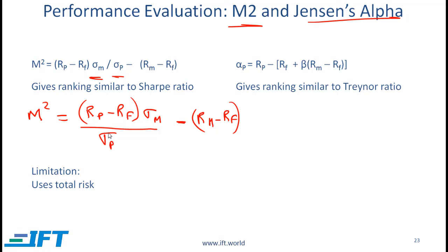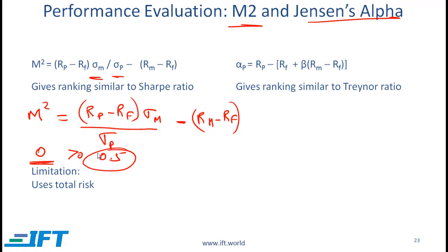The benefit of M-squared over the Sharpe ratio is that we get a number which has meaning — this is called a ratio scale. If a manager invests in a portfolio with return and risk similar to the market, the expression simplifies to zero. An M-squared of zero means the manager is not adding any value; you might as well just invest in the market. If M-squared is greater than zero — say 0.5 — that means the manager is actually adding value.